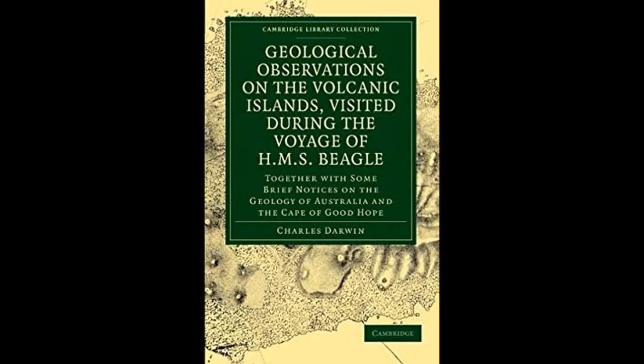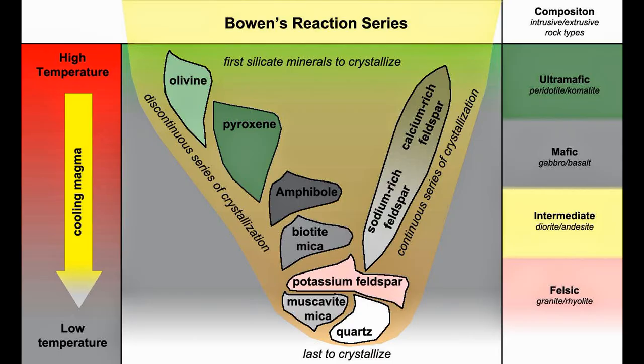In 1844, Darwin published Geological Observations on the Volcanic Islands Visited During the Voyage of HMS Beagle, in which he discussed geological observations he made at the Cape Verde Archipelago, Fernando de Noronha Archipelago, Tahiti, Mauritius, Ascension Island, St. Helena, the Galapagos Islands, New Zealand, and others. One of the important discoveries in this book is that magma undergoes chemical changes from melt to eruption, a process called igneous differentiation. Darwin was one of the first naturalists to discuss this process, though of course much more is known about it today.